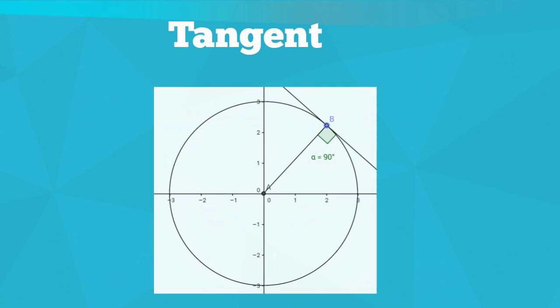A tangent is a line that intersects the circle at one point. A secant is a line that intersects the circle at two points.